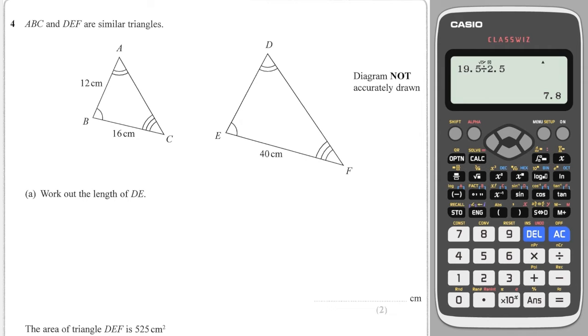Next question. They give us these little lines which tell us which sides are corresponding. I can see that these two are corresponding because they're both opposite the double-lined angle. The first thing I would do is work out the scale factor, which would be the larger one divided by the smaller one. So 40 divided by 16, which is 2.5. If I want to work out DE, it's this side here opposite the triple angle. If I want to go to the bigger shape, I have to multiply. So it's 12 multiplied by 2.5, which is 30.